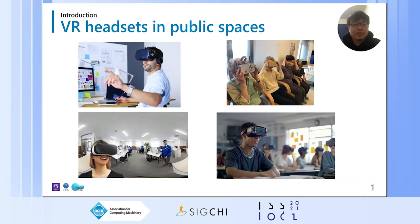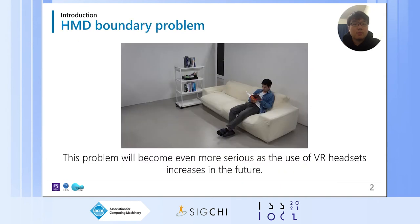VR headsets are increasingly becoming common devices. Headsets allow us to experience content and information through a fully immersive VR experience. Because HMDs are relatively inexpensive and easy to buy, they are being introduced in various places, such as home, school, office, museum, and so on. But VR headset use is problematic in public spaces because they create a disconnect between the physical and virtual world. We call this the HMD boundary.